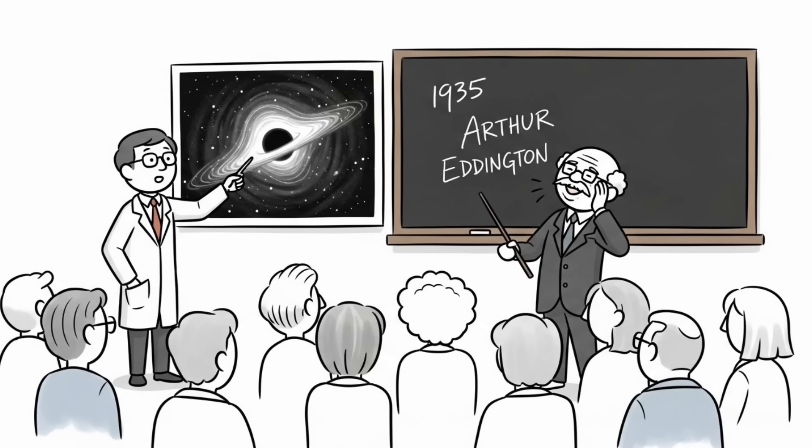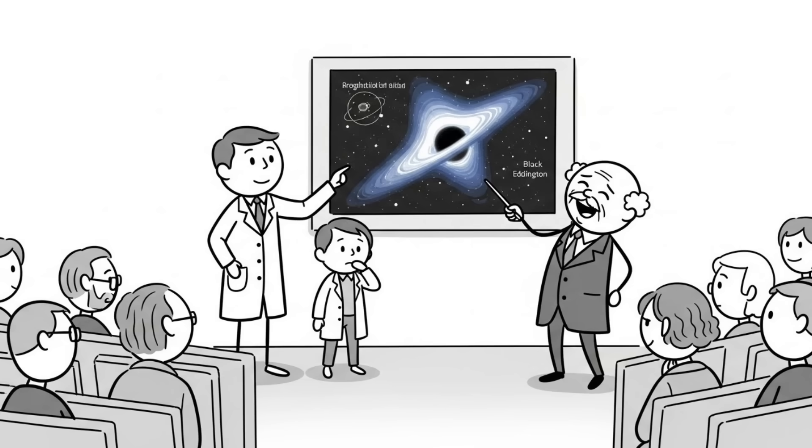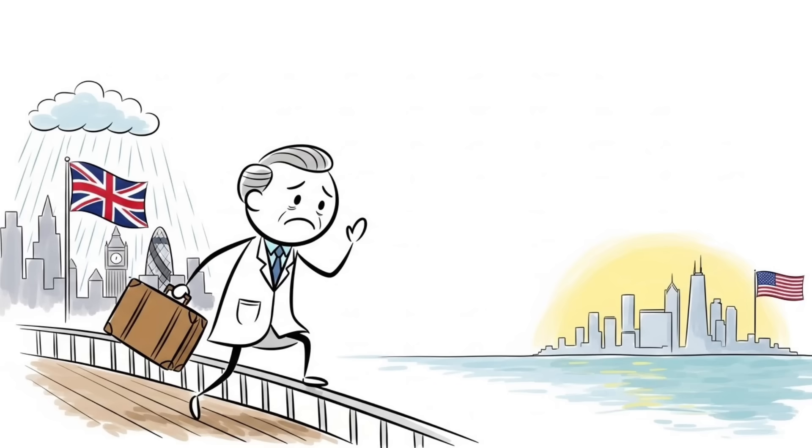When he presented this in 1935, Arthur Eddington, the most famous astronomer of the time, publicly mocked him in front of everyone, calling it stellar buffoonery. The humiliation was so bad, Chandra left England for America.